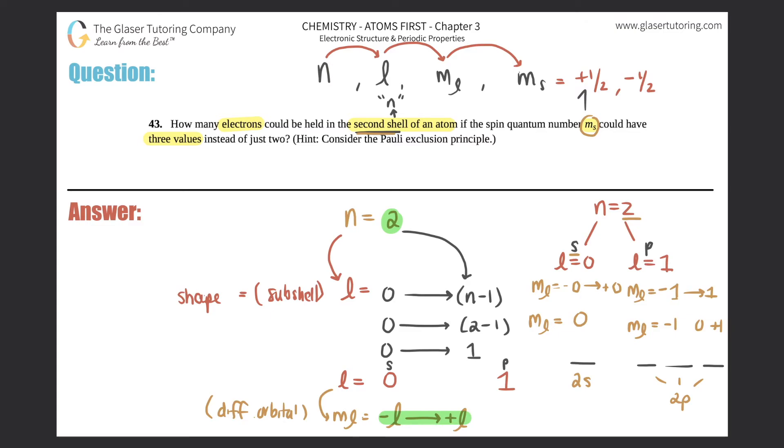But now they're saying, what happens if the ms had three values? So maybe, you know, usually the ms is positive a half, negative half. Maybe now it's plus one half, zero, and then negative one half—I don't know, right? Just any three values. That means that technically three electrons could be located in one orbital because of the Pauli exclusion principle. There's always a max of two electrons in your one orbital.